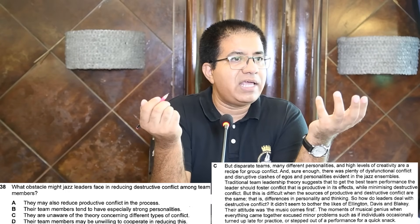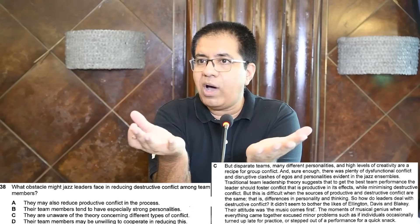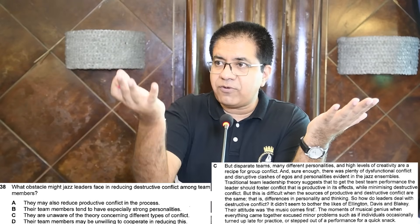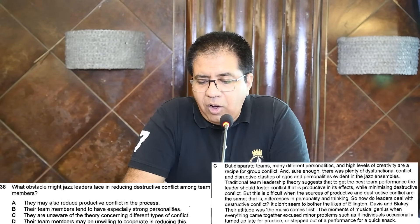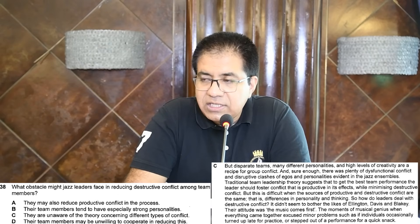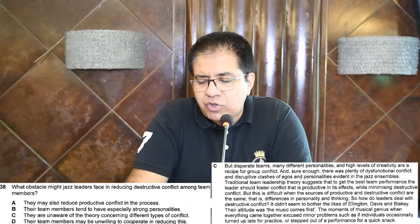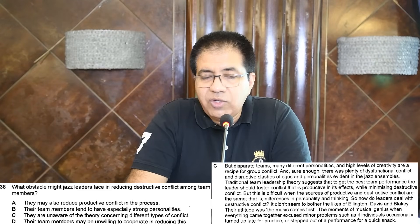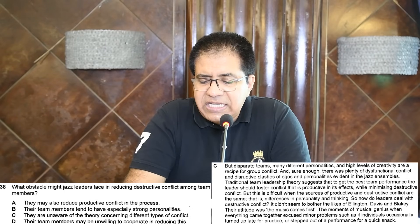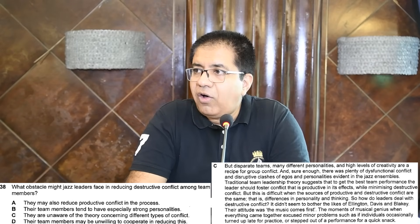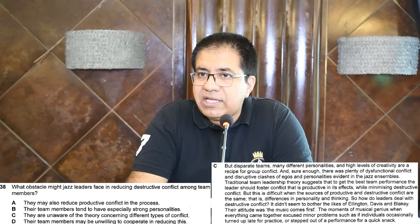For example, in one organization there are two conflicts — one productive, one destructive — but the source, meaning the people in conflict, are the same. So if you reduce destructive conflict, you also reduce productive conflict. Option B: their team members tend to have especially strong personalities — not the obstacle. Option C: they are unaware of the theory — no, they were already aware. Option D: their team members may be unwilling to cooperate — not mentioned.